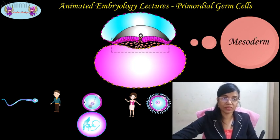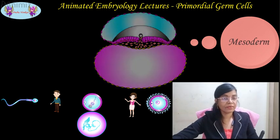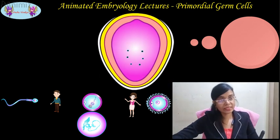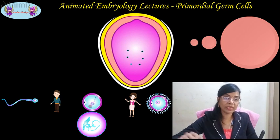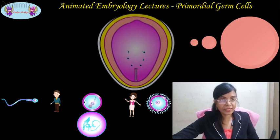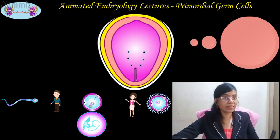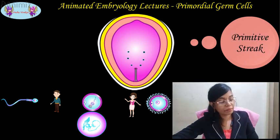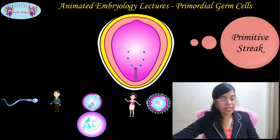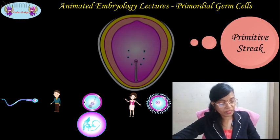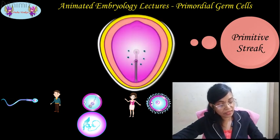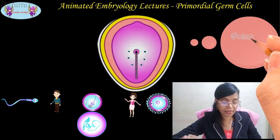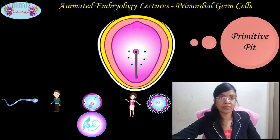By the second week, some cells of the epiblastic layer are marked for PGC cells. By the end of the second week, a long groove-like structure appears in the caudal end of the epiblastic layer called the primitive streak. By the beginning of the third week, the primitive streak increases in length and forms a pit at its cranial end called the primitive pit.